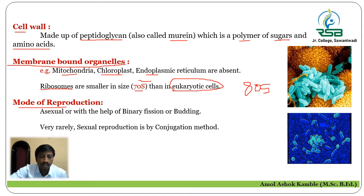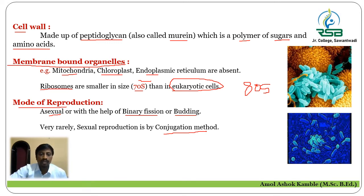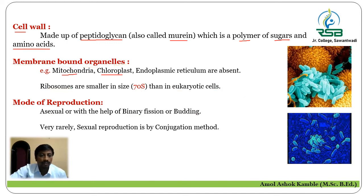The mode of reproduction: organisms in Kingdom Monera reproduce by asexual mode as well as sexual mode of reproduction. In asexual reproduction, they reproduce by binary fission or budding, while rarely in sexual reproduction it is by the conjugation method. In binary fission and budding there is no fusion of gametes, whereas conjugation is the sexual method for producing new organisms.